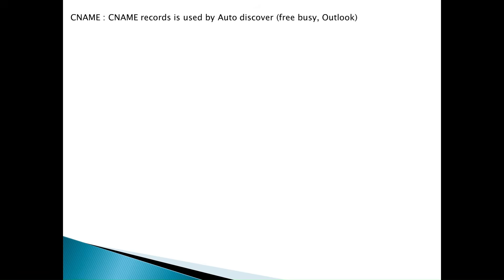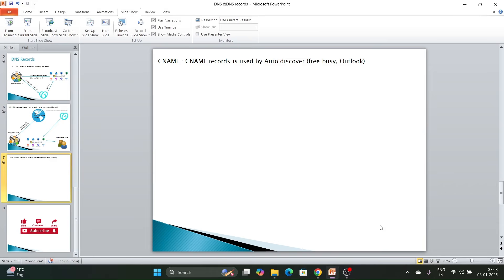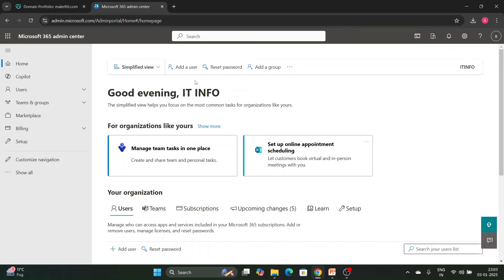Now let's discuss the third record: the CNAME record. CNAME record is used by Autodiscover. Autodiscover is used to automatically configure a profile in Outlook for users in the organization or for a domain. Autodiscover also supports free/busy and there are some different services which can be used by Autodiscover. CNAME records are used for Autodiscover.